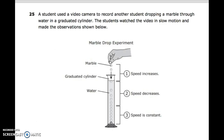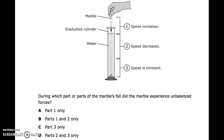Number twenty-five: a student uses a video camera to record another student dropping a marble through water in a graduated cylinder. The student watched the video in slow motion and made observations: 1) speed increases, 2) speed decreases, 3) speed is constant. During which part or parts of the marble's fall did the marble experience unbalanced forces? Part 1 only. Part 1 and 2 only. Part 3 only. Parts 2 and 3 only.